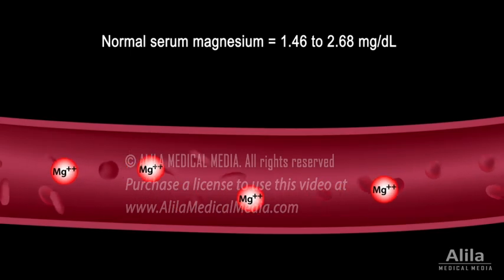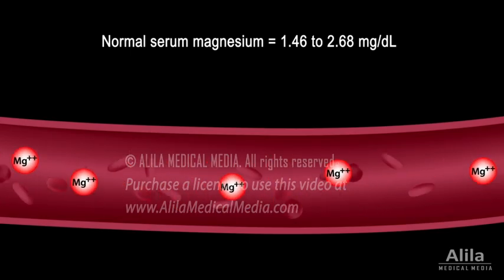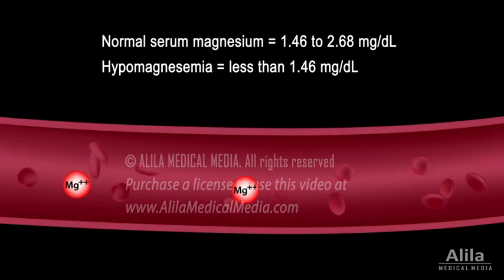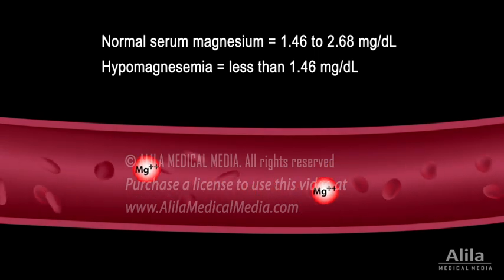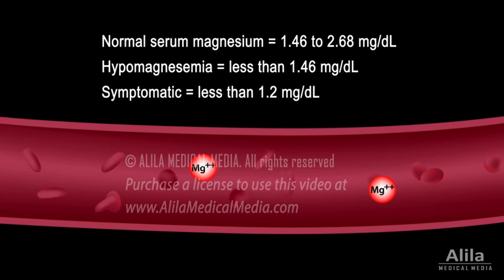Mutations affecting these factors are known to cause several hereditary syndromes involving magnesium imbalances. Normal serum magnesium levels are between 1.46 and 2.68 mg per deciliter. Hypomagnesemia is defined as a serum magnesium level of less than 1.46 mg per deciliter. However, patients are typically asymptomatic until this number drops below 1.2 mg per deciliter.